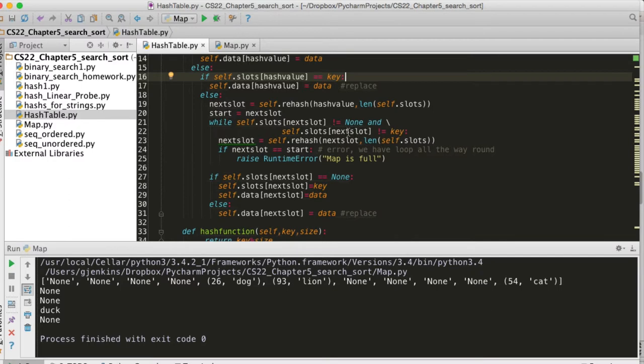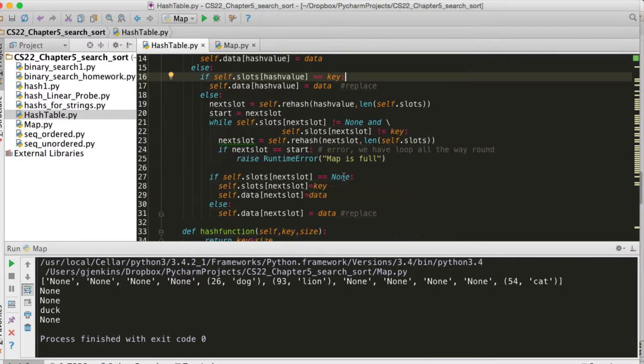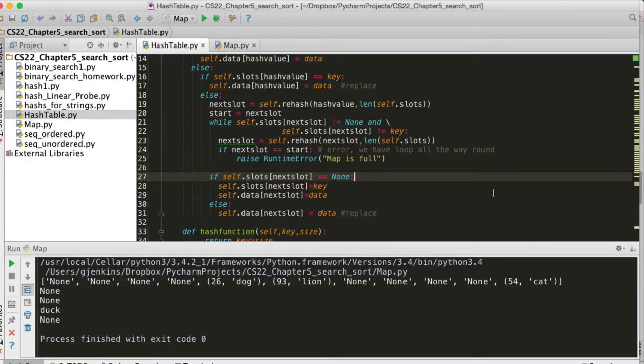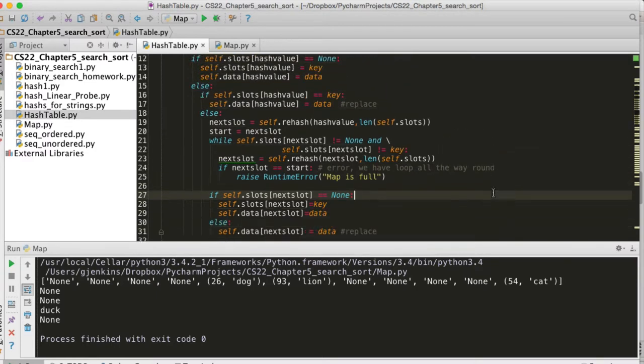Did it stop because it was none? And if it did, what you'll see it do is it sets the key into that empty slot and the data. If it found it was already there, it just replaces the data. And so that's inserting data.